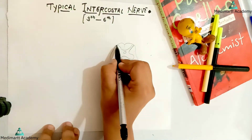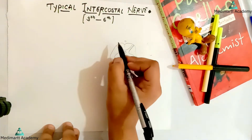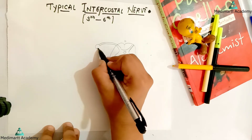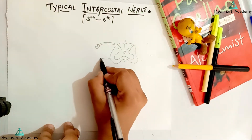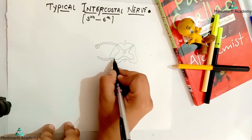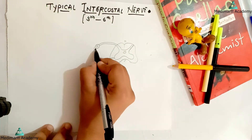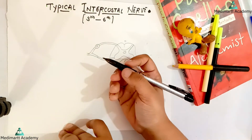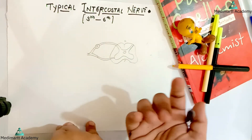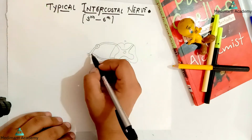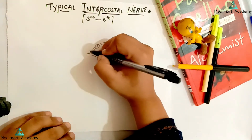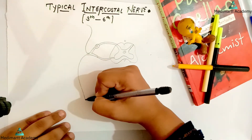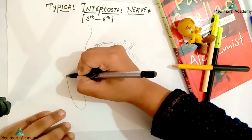This is our dorsal side and this is our ventral side. Here is our dorsal root and the dorsal root ganglia will be there. Here comes our ventral root. The dorsal root and ventral root join to form the spinal nerve. The dorsal root is sensory — it carries the afferent fibers — and the ventral root is motor and carries the efferent fibers. This is our trunk of the spinal nerve. From here, one ventral ramus and one dorsal ramus will emerge. Since we are drawing the intercostal nerve, I am focusing on the ventral ramus.